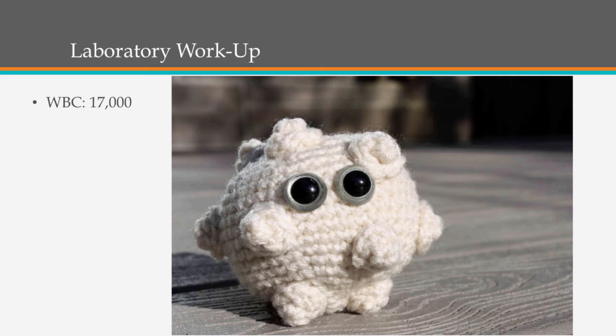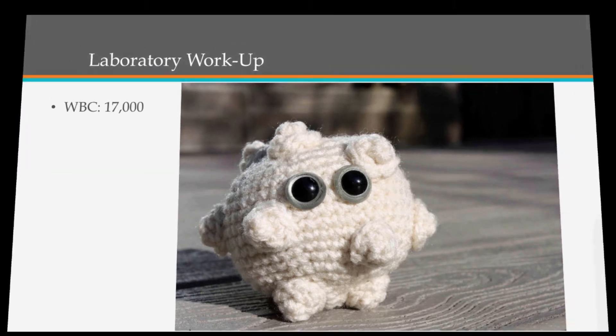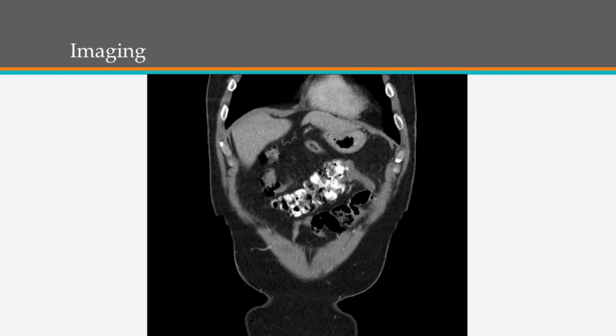We ordered labs at intake — the abdominal pain panel, which here includes CBC, electrolytes, liver enzymes, and biliary work. The only remarkable finding was an elevated white count of 17,000. We weren't sure what to make of that in isolation, but it is a little high. He was given 100 micrograms of fentanyl and was feeling pretty well afterwards. He actually requested to go home, which we denied — this is a guy who hasn't been to his doctor in 20 years and now has pain. So this is the CT scan.